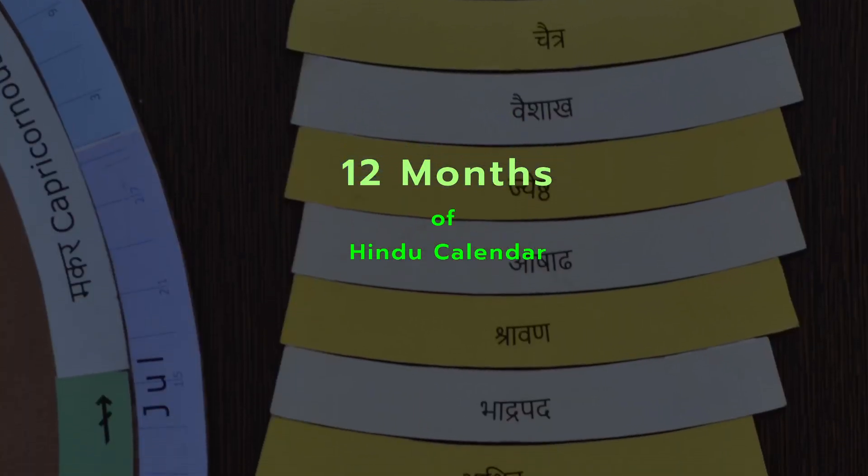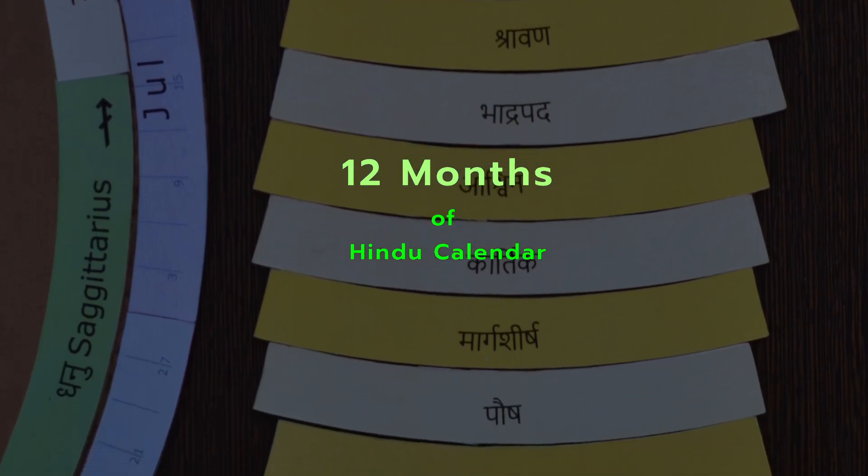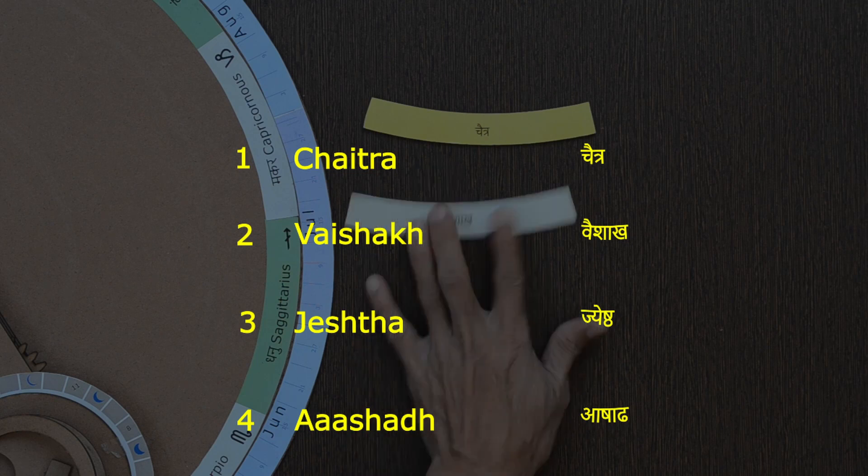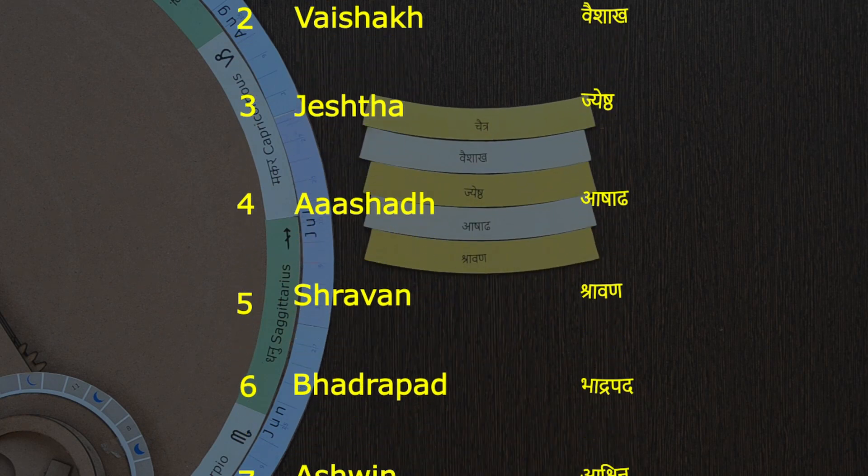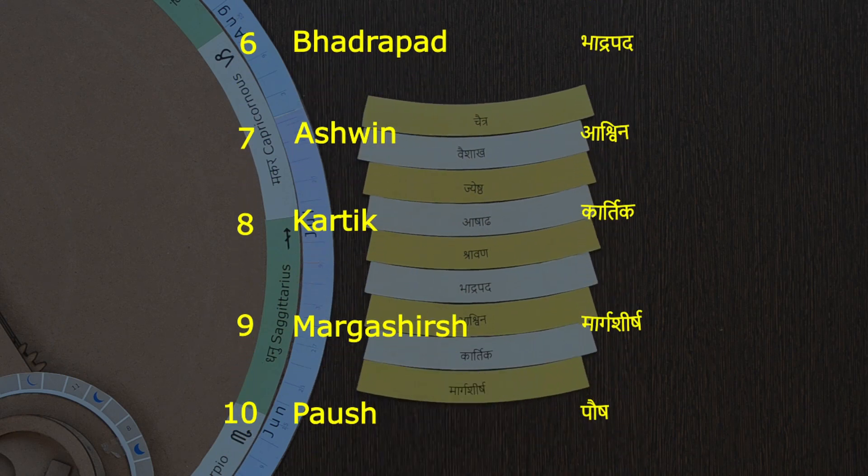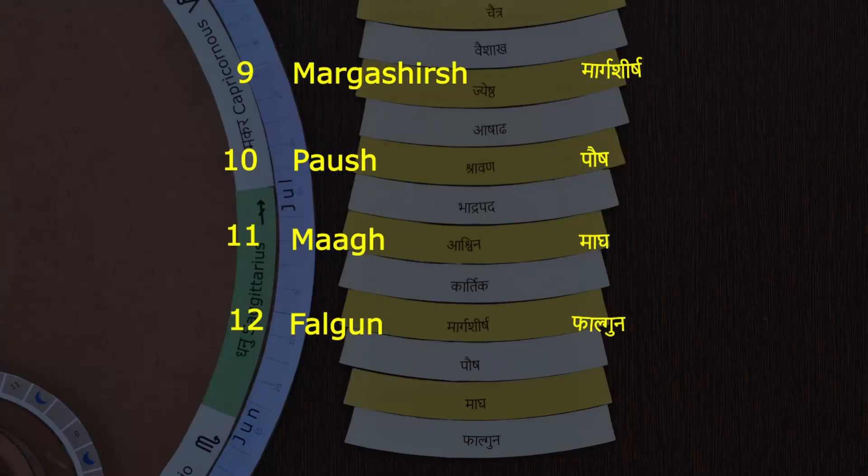Just like the Gregorian calendar, there are 12 months in the Hindu calendar as well. They are named as Chaitra, Vaishak, Jeshta, Ashad, Shravan, Bhadrapat, Ashvind, Kartik, Margashish, Paush, Magh, and Falgun.